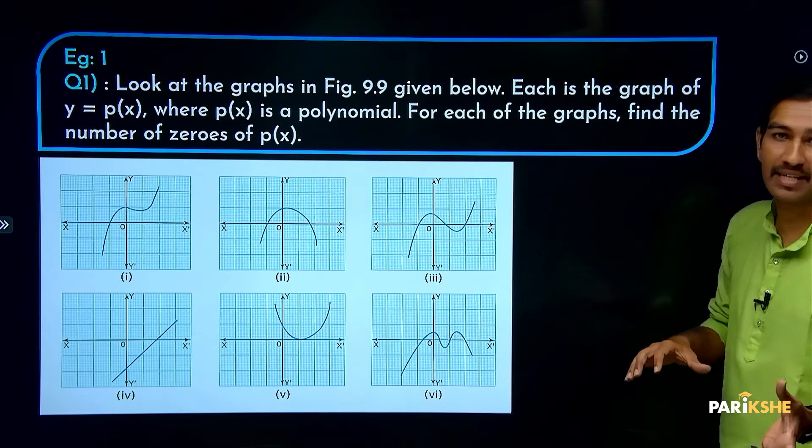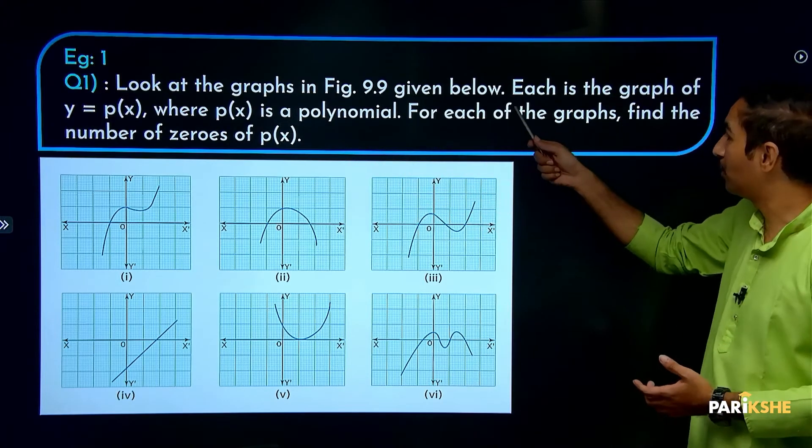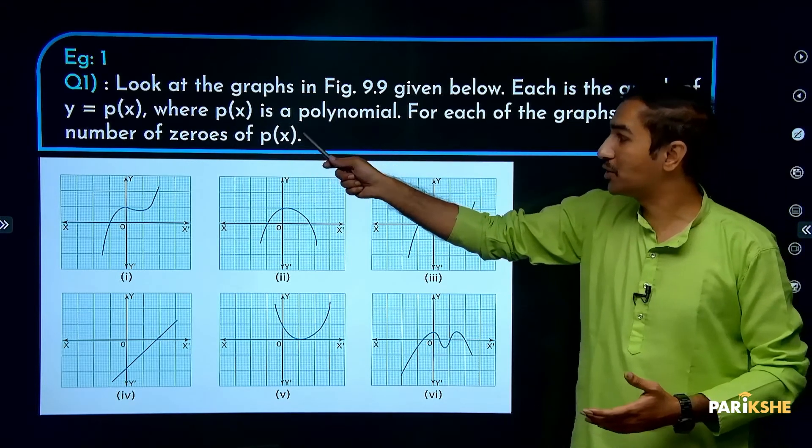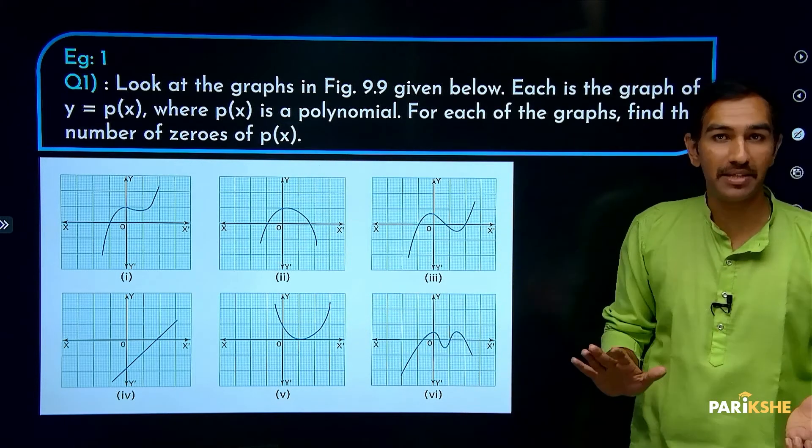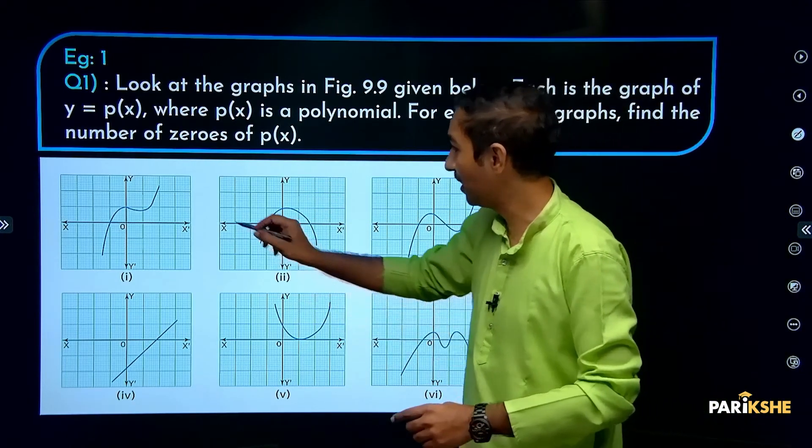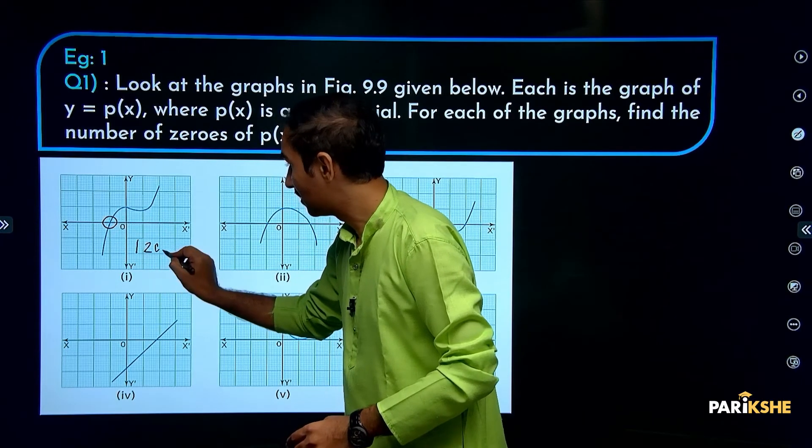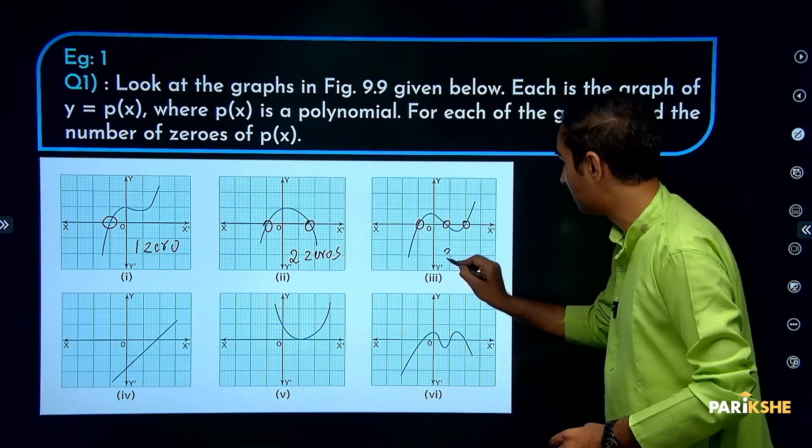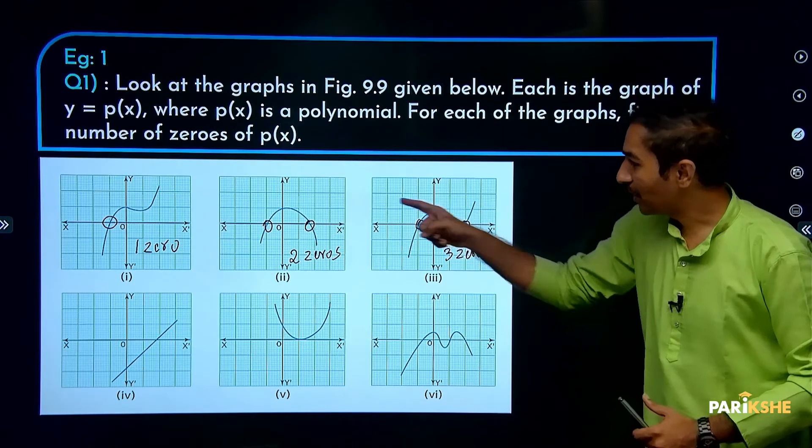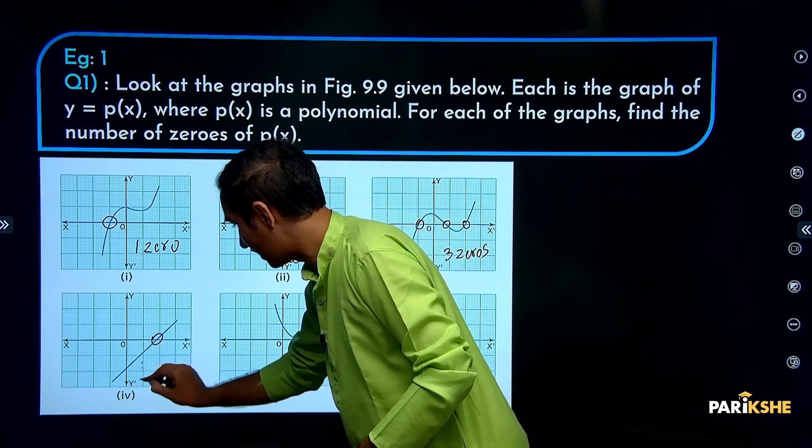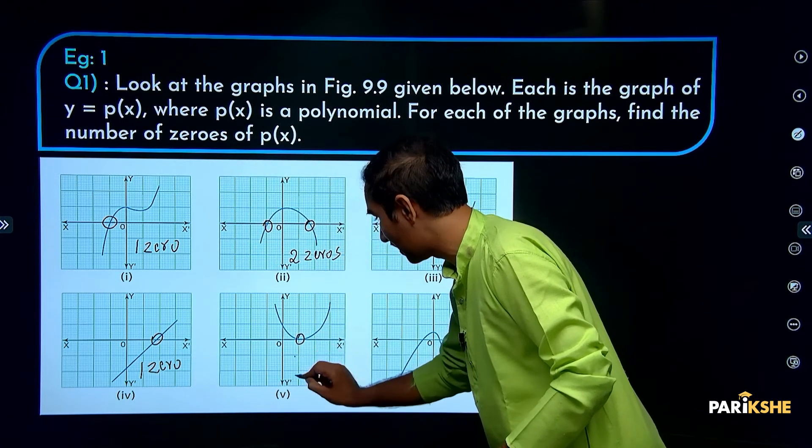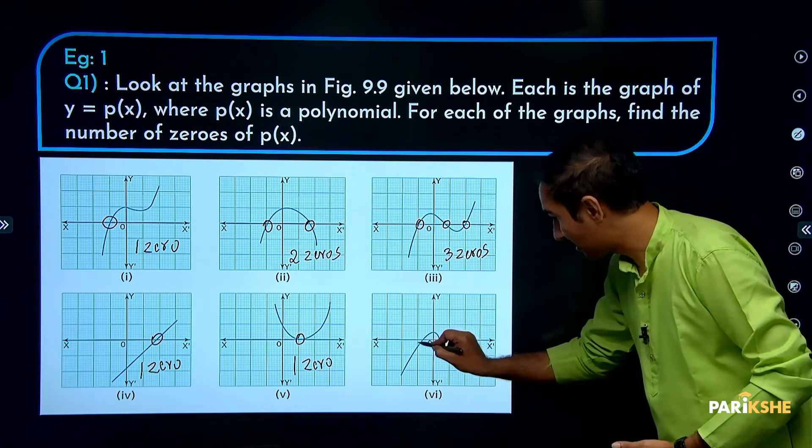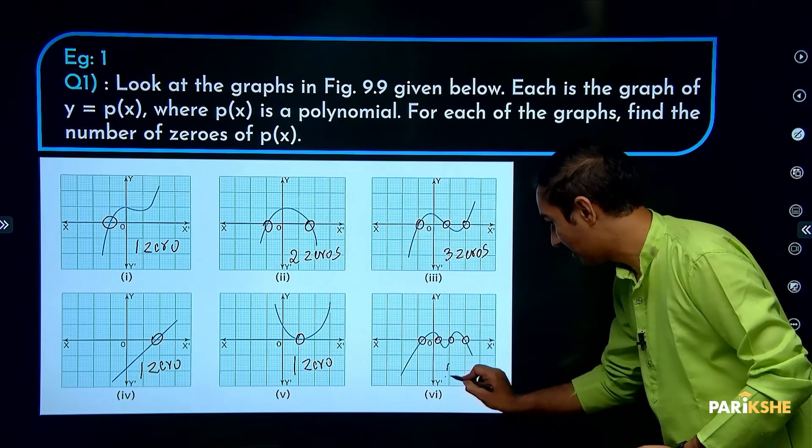Here's an exercise. Look at the graphs in the figure. Each is the graph of y = p(x) where p(x) is a polynomial. For each graph, find the number of zeros. Very simple: count how many times the graph touches the x-axis. First graph: touches at 1 point, so 1 zero. Second graph: 2 zeros. Third graph: 1, 2, 3 - so 3 zeros. Fourth graph: 1, 2, 3, 4 - so 4 zeros.